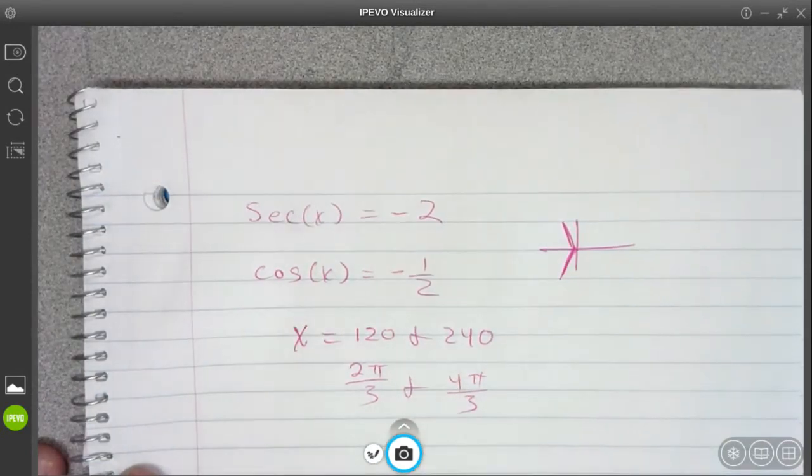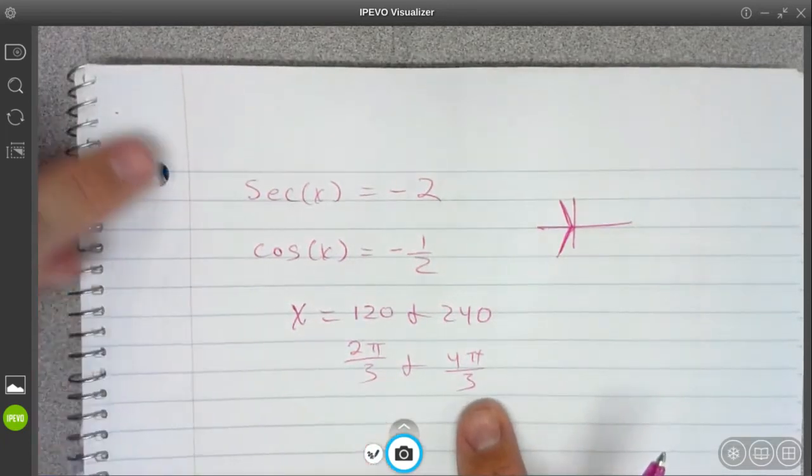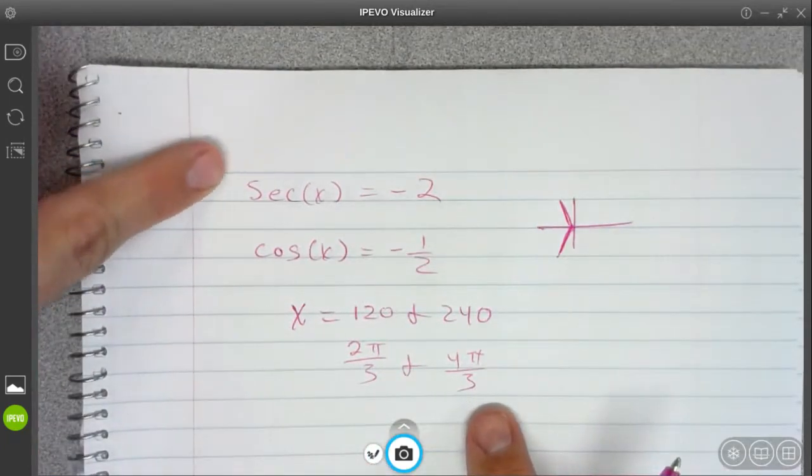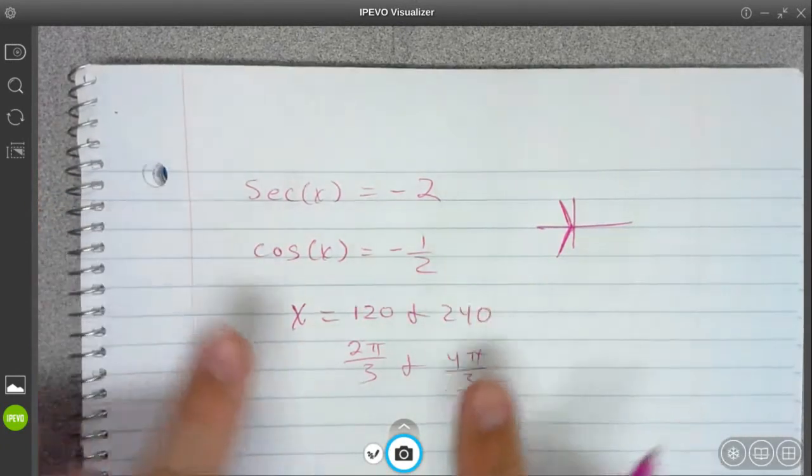Or that would be 2π over 3 and 4π over 3. Those are my two angles that will do it. And I don't have to flip these or anything. I just converted the equation into a cosine equation by flipping it. So these are my answers.